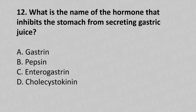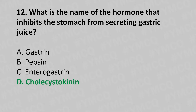Now let's move to question number 12. What is the name of the hormone that inhibits the stomach from secreting gastric juice? Option A: Gastrin. Option B: Pepsin. Option C: Enterogastrin. Option D: Cholecystokinin. And the answer is Option D: Cholecystokinin.